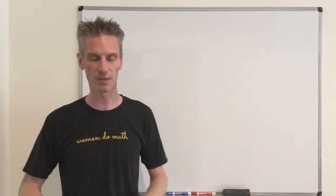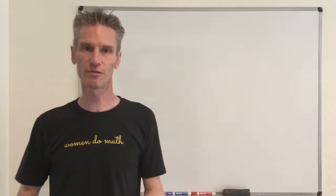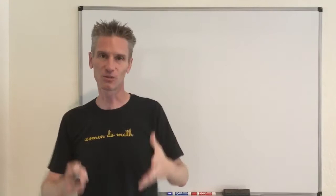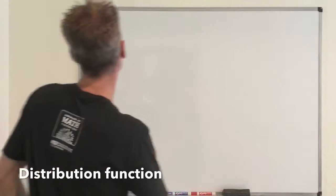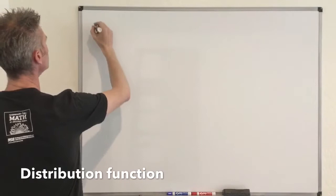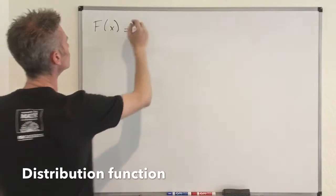I remind you that a continuous random variable is characterized by its distribution function. If you have a continuous random variable X, the distribution function is this function capital F of little x, which is equal to the probability that capital X is less than little x.